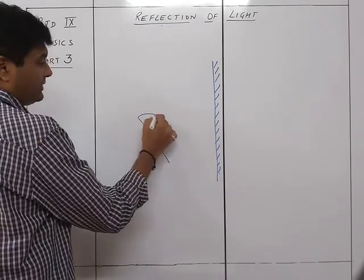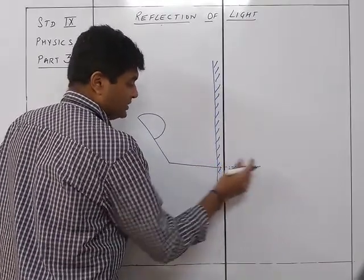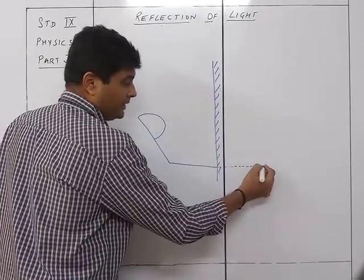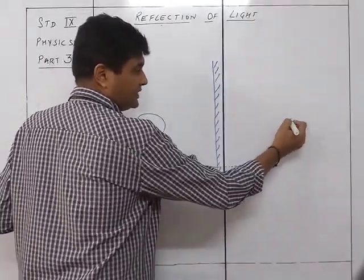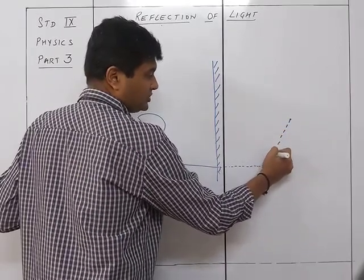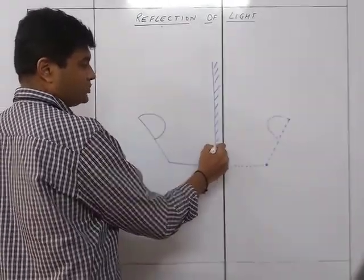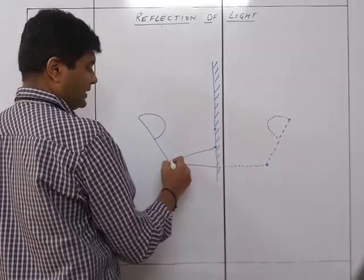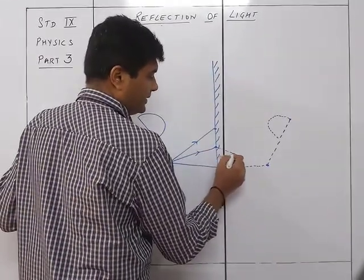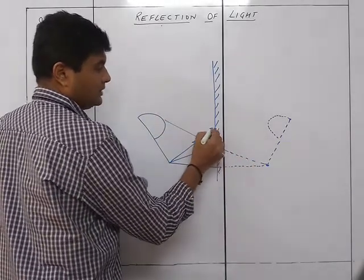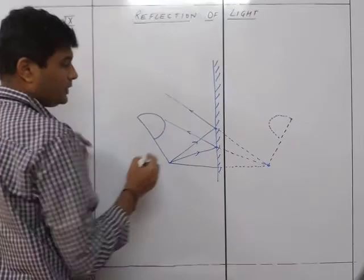We mark point P on the object side, then measure the same distance on the other side of the mirror to mark the image. We draw incident rays from two points on the object to the mirror, then extend them as dotted lines behind the mirror to form the image.